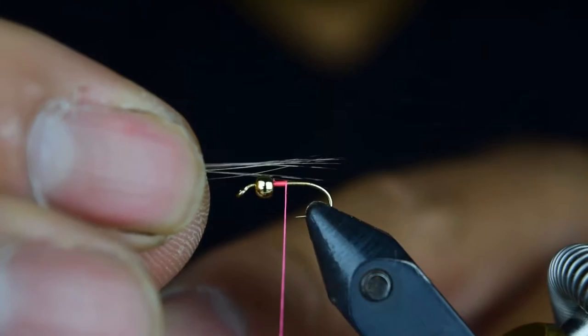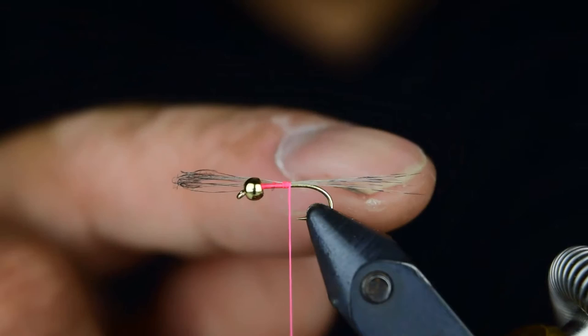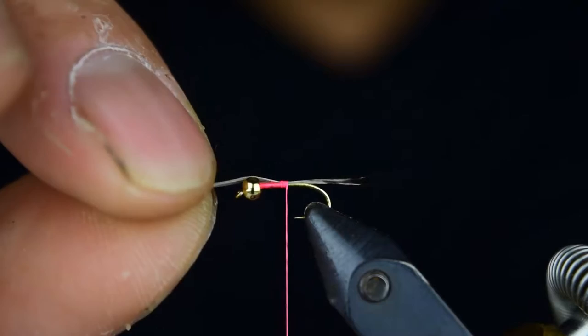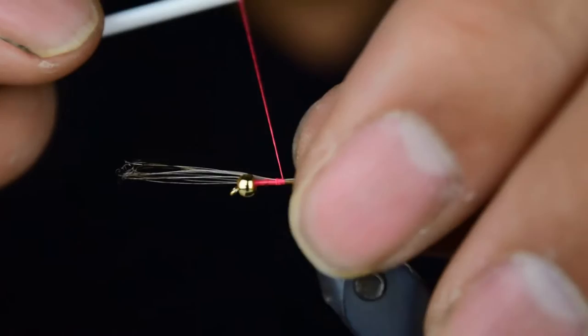We'll transfer this to the other hand and go ahead and tie these in real quick. Put a couple wraps, and if they're a little too long, all you got to do is just go ahead and grab a hold of the tips here and pull them. That looks about right there.